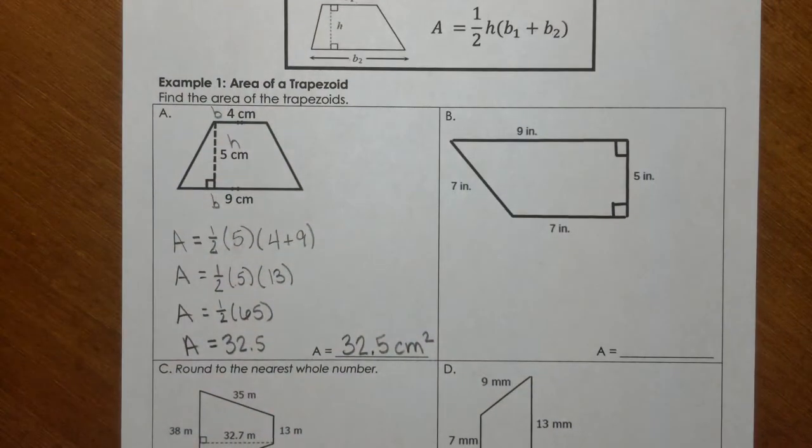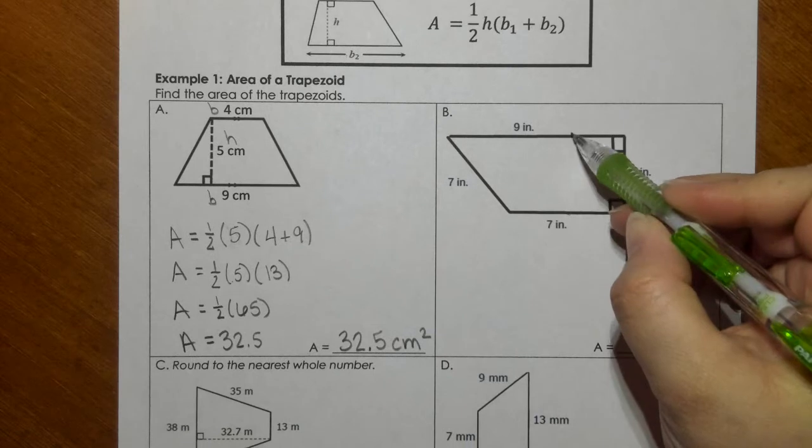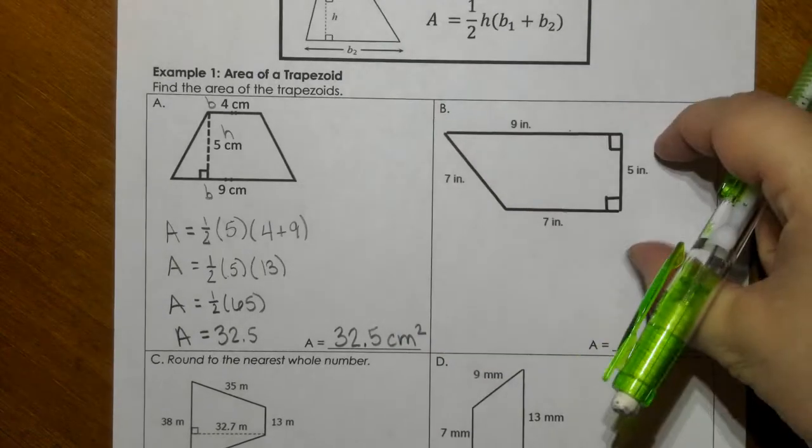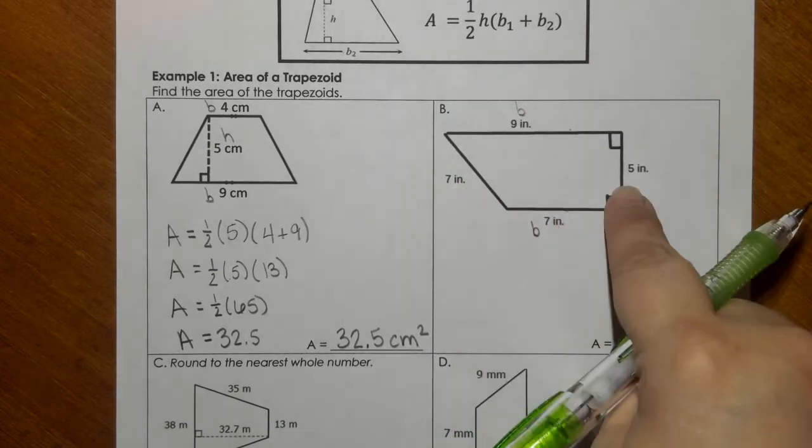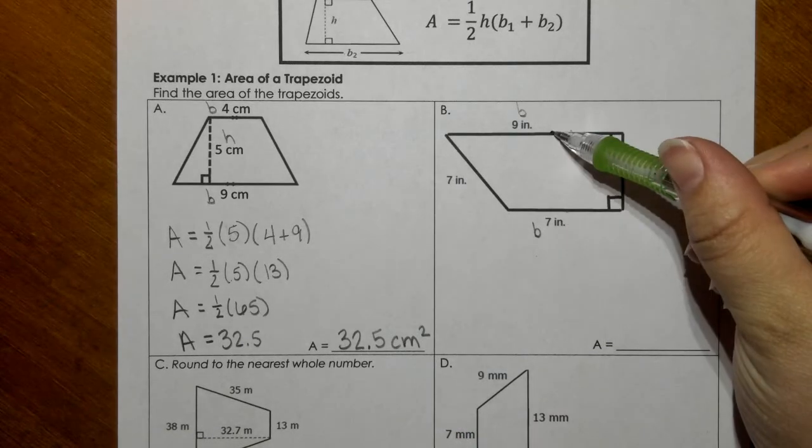In part B, we're given some extra information. So the bases, first of all, I know that these are the bases. They're never going to touch each other no matter what. So I've got my bases. Now I have to decide which one is my height. The height is the distance between base 1 to base 2.